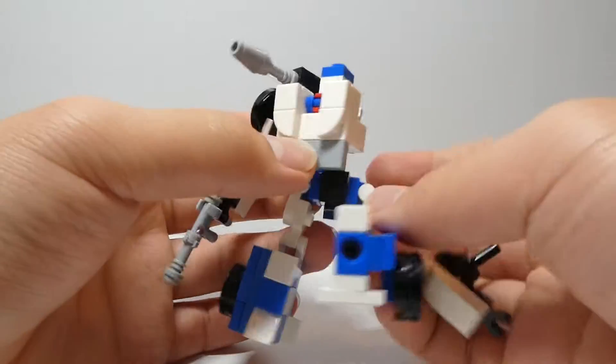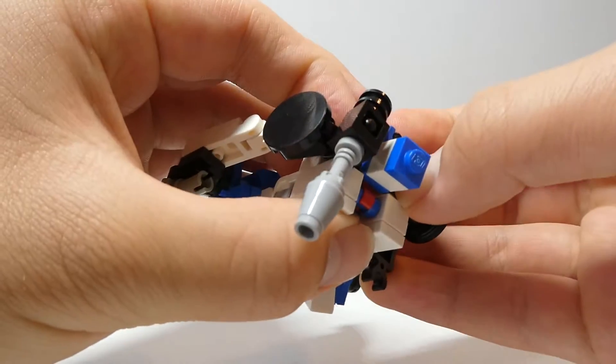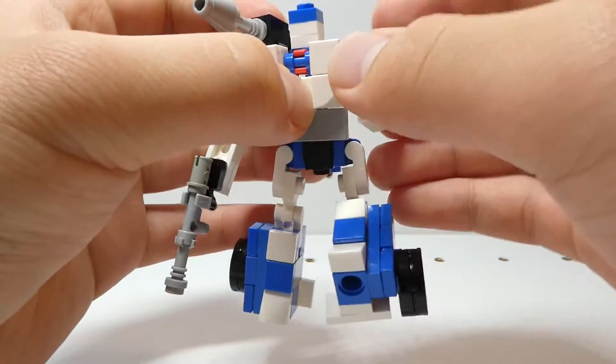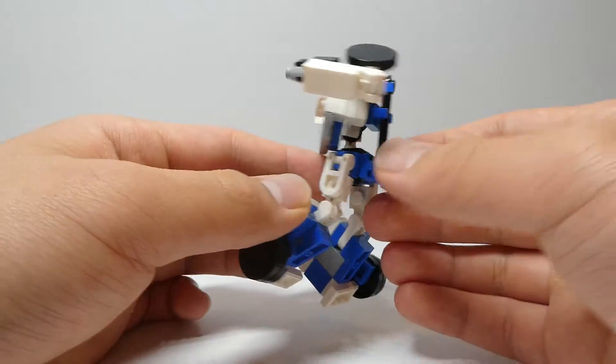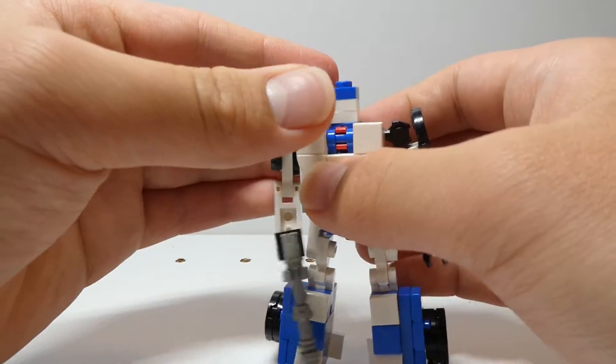And then I guess he also sort of has a waist rotation. If his arms don't fall off. I guess he kind of has a waist rotation here because of the transformation. But I guess that's kind of it for Mirage.